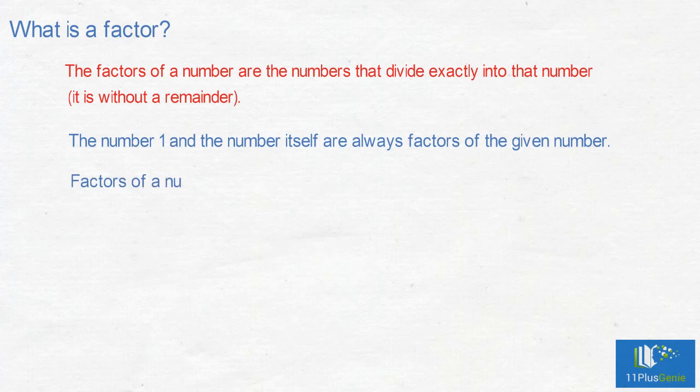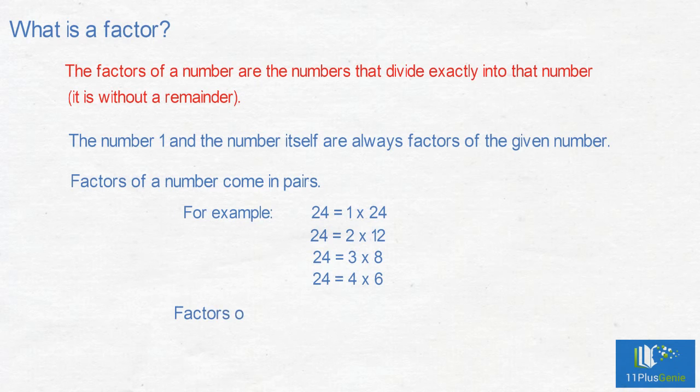The number 1 and the number itself are always factors of the given number. Factors of a number come in pairs. For example, the factors of 24 are 1, 2, 3, 4, 6, 8, 12, and 24.